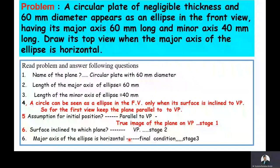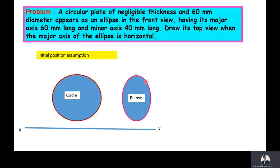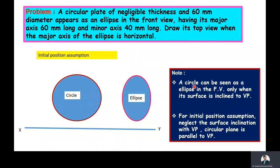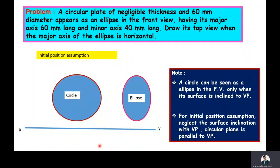Before drawing the detailed solution, we consider the initial position assumption. In the problem it is mentioned that the circular plate appears as an ellipse in the front view. A circular plate makes an angle to the VP, then only it appears as an ellipse in the front view. So for the initial position assumption, neglect the surface inclination to VP so that the circular plane is parallel to VP and perpendicular to HP, so that we will get a true image on the vertical plane.